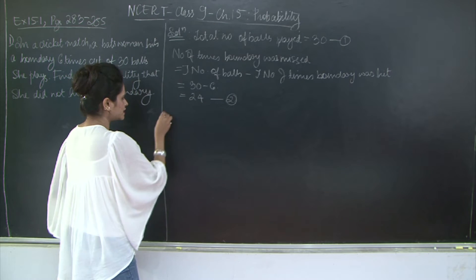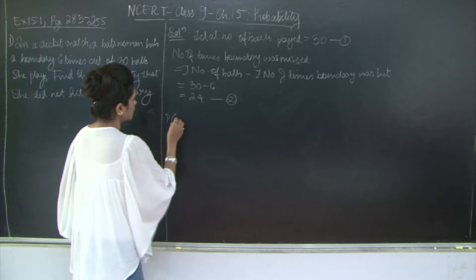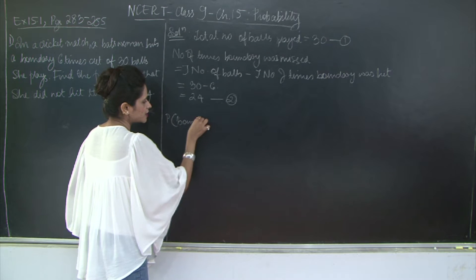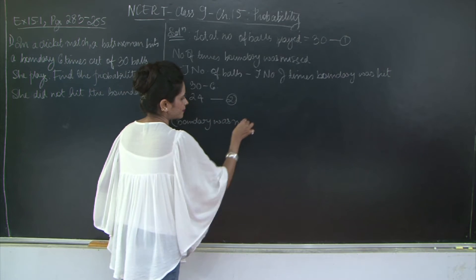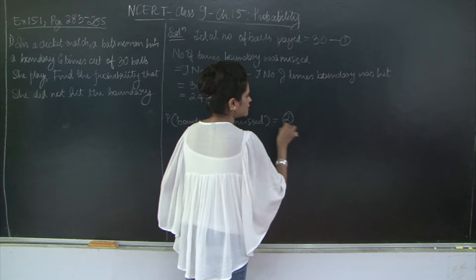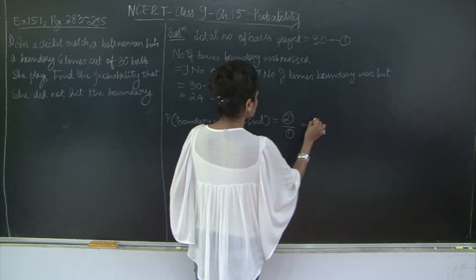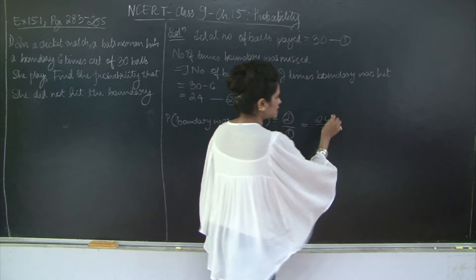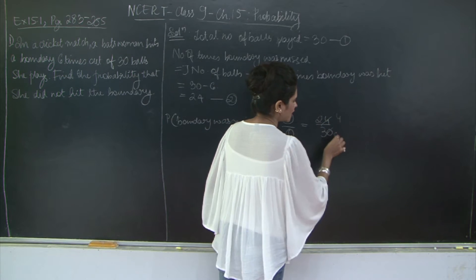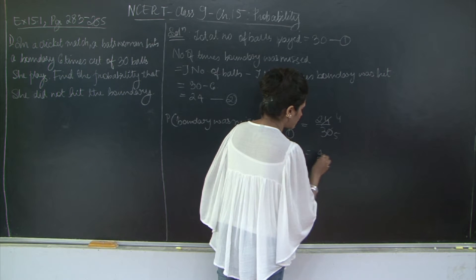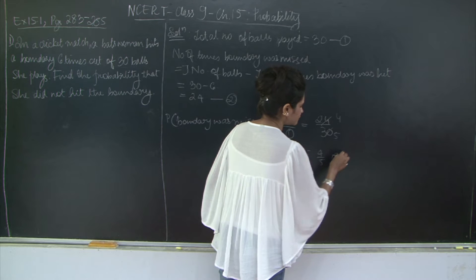So the probability that boundary was missed, or she did not hit the boundary, it's going to be equation 2 divided by equation 1, which is 24 upon 30. So let's check: 6 times 4 is 24, 6 times 5 is 30. So you can leave it as it is. So this is going to be either 4 upon 5.